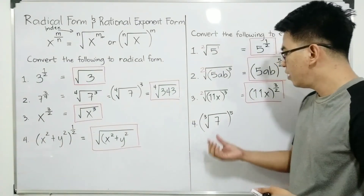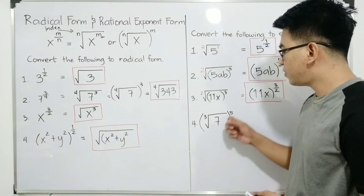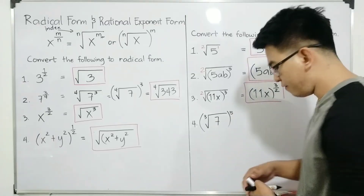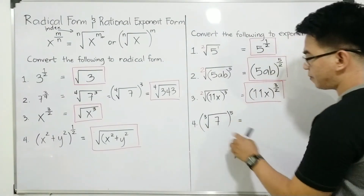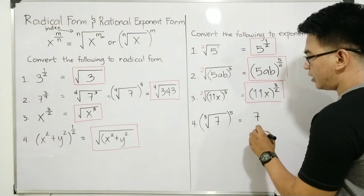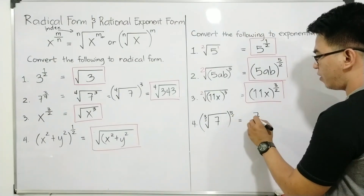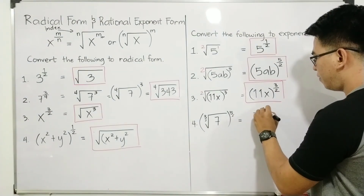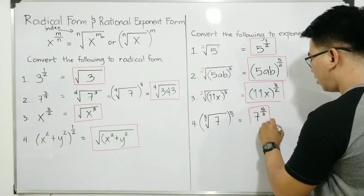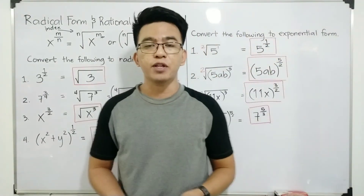Last, we have number 4. We have the cube root of 7 raised to 5. To convert this, copy your 7. This becomes your base. The index 3 is your denominator, and the exponent 5 is your numerator. This will become 7 raised to 5 over 3. And this is the answer for item number 4. I hope you got the steps on how to convert expressions.